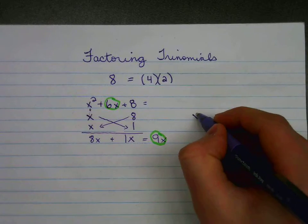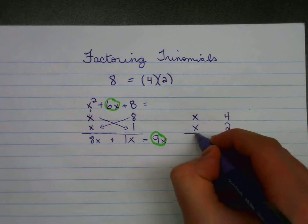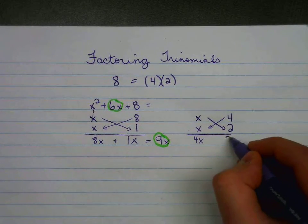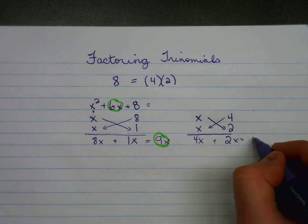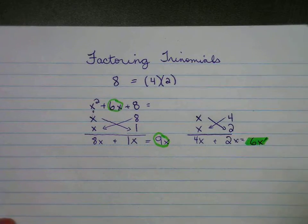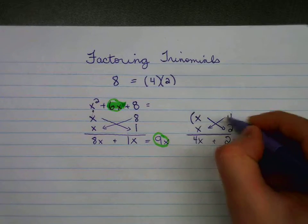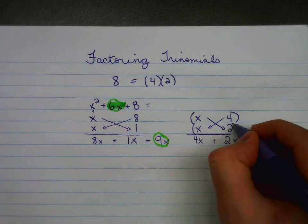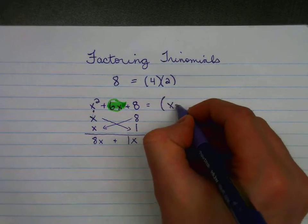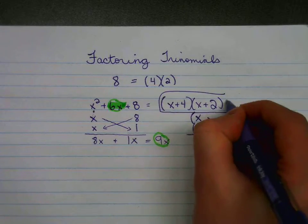If we were to try this again using x times x and 4 times 2, and diagonally check the product of 4x, the product of 2x, add it together which gives you 6x. In this case, 6x matches the 6x that we're looking for, and so the correct factors are x plus 4 and x plus 2. The correct factors would get written horizontally as x plus 4 and x plus 2. That is our final answer.